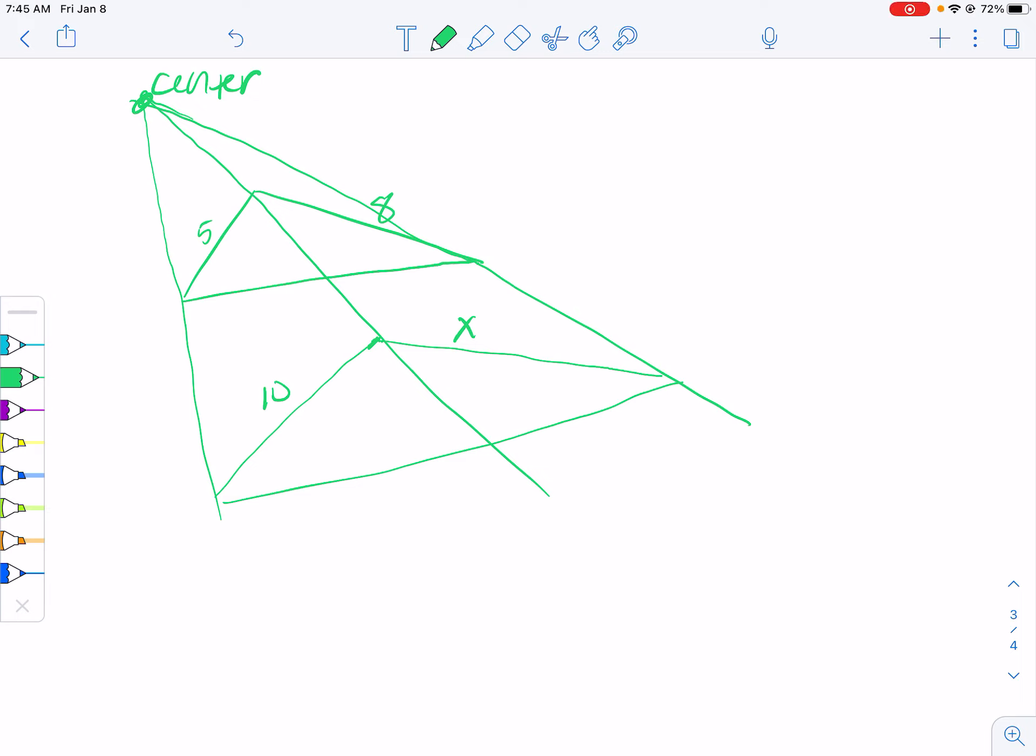So here we have these two figures that are a dilation, but what we don't know is this side length here. So what I need to do is I need to figure out what our scale factor is and then use the scale factor to find our missing side length.